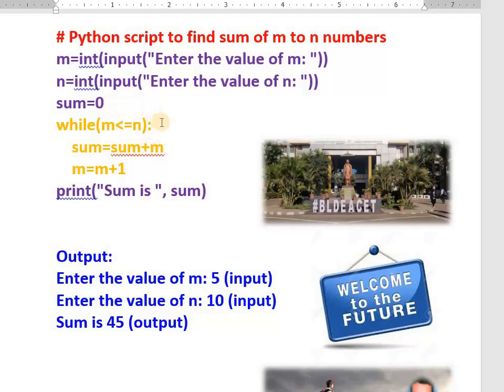M less than equals to N. 5 less than equals to 10. Yes. First time sum is 0, so 0 plus 5 is 5. 5 plus 6 is 11. 11 plus 7 is 18. 18 plus 8, how much? 26.